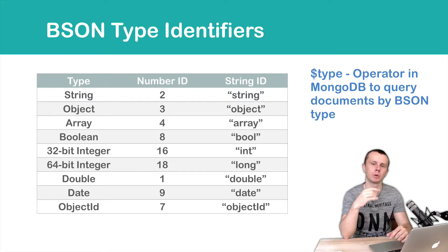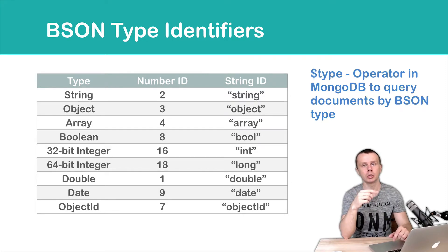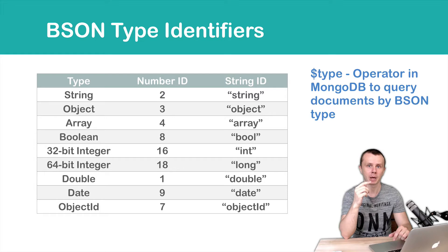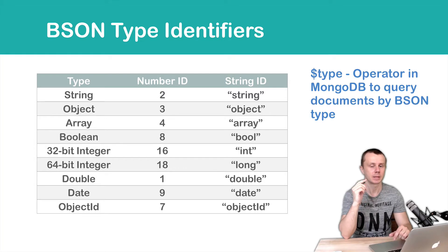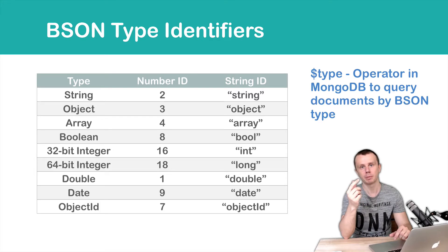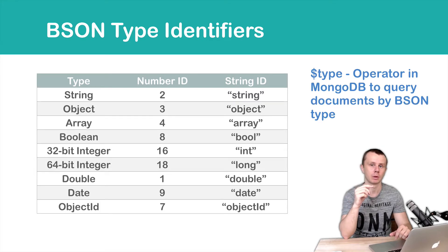This means you will be able to query MongoDB documents not just by values but also by their types. In some cases this can be very useful, and we will get back to this in the next module.